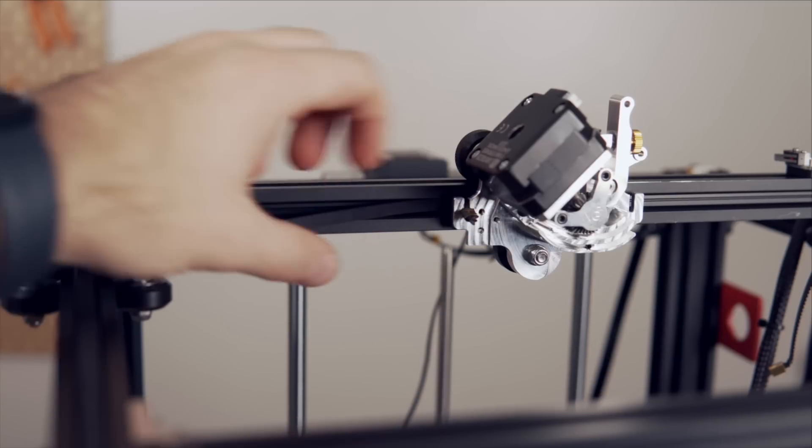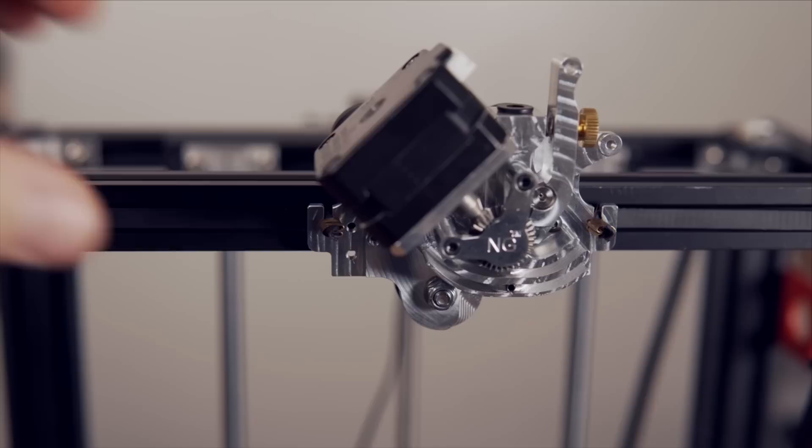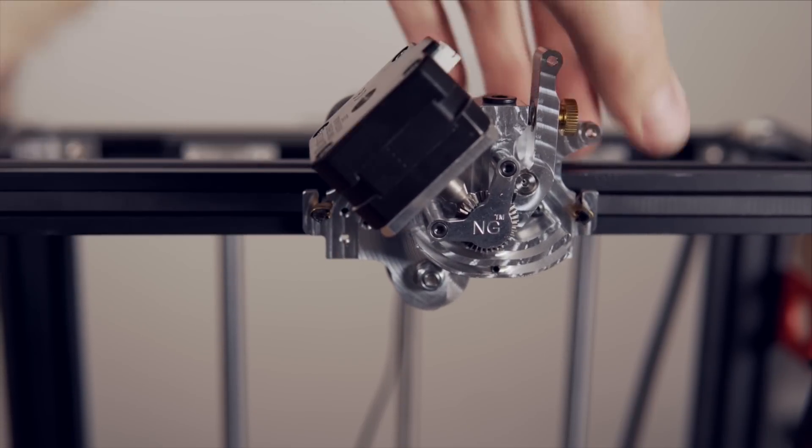We're going to be installing the same belt that we removed from the initial X carriage, just the exact same way. Take the left side and slip it over the notch on the left of the NG, and the right side of the belt and slip it over the right side. The little metal pieces will keep it from popping out.